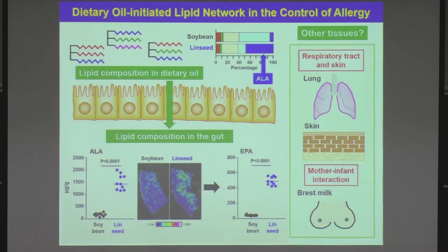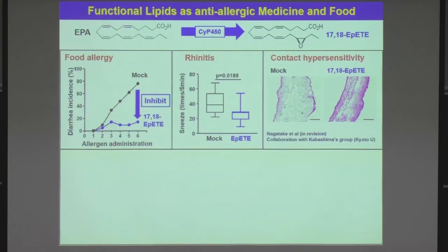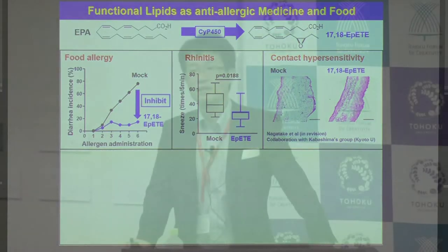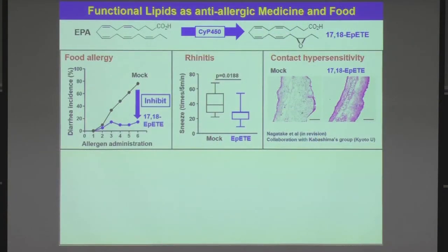We then examined what happened in other tissues such as the respiratory tract and skin, and in mother-infant communications through breast milk. We found that EPETE is very good for controlling allergic responses not only in the intestines but also in the respiratory tract and skin. In rhinitis models, the number of sneezings was reduced by EPETE treatment, and in contact hypersensitivity models of skin inflammation, this was also ameliorated by EPETE treatment, suggesting EPETE is a very good drug candidate to control allergic or inflammatory diseases at various tissues.